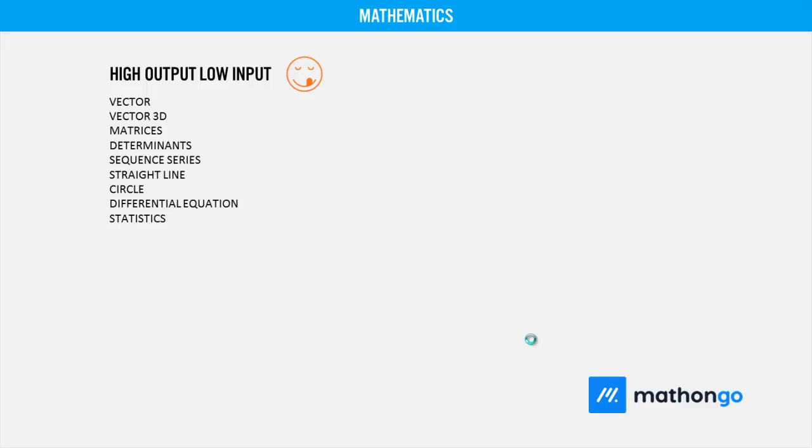Coming to mathematics - high output low input: vector, vector 3D, matrices, determinants, sequence series, straight line, circles, differential equation, and statistics. These are your chapters which will give you high output with low input. Why low input? Some people confuse - in vector 3D, there seems like a lot of hard work, but it's an easy topic. And as far as the questions are asked, that's why it's a low input game. Similarly for differential equation, topics are there, but only CBSE level concepts are used. Stats - low input again, just go by standard formulas, you will get high output.